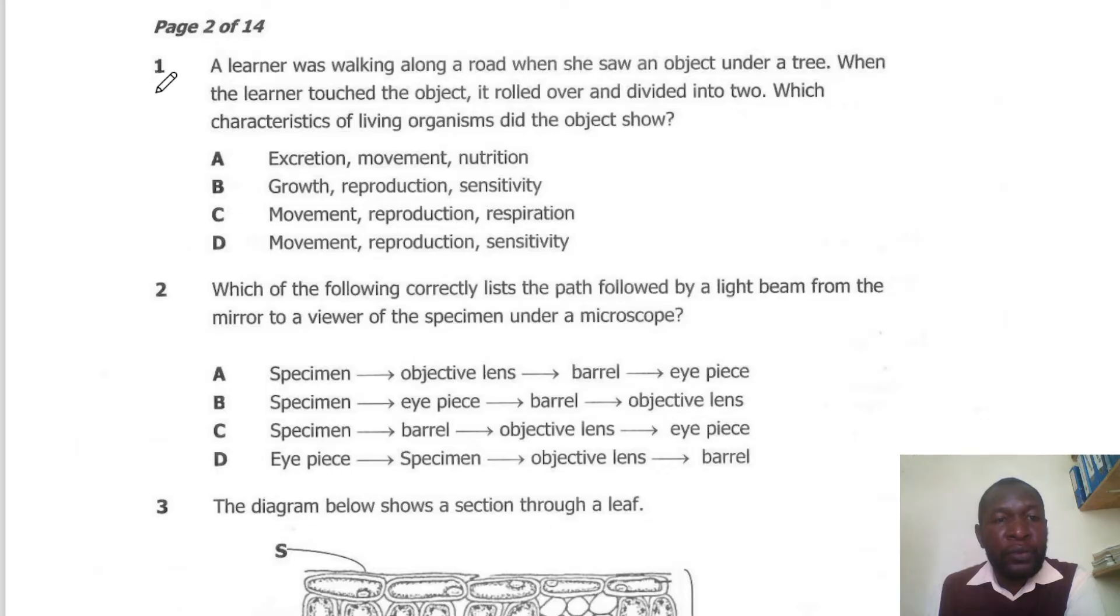Question 1. Elena was walking along a road when she saw an object under a tree. When Elena touched the object, it rolled over and divided into two. Which characteristics of living organisms did the object show? The object showed growth, reproduction, and sensitivity. So the answer here is B.